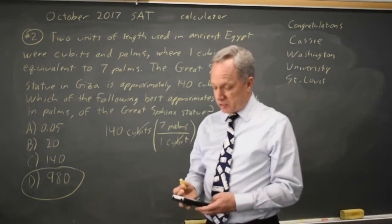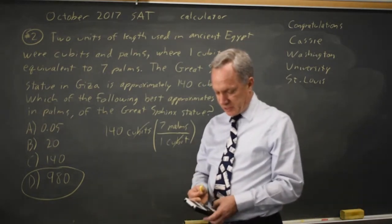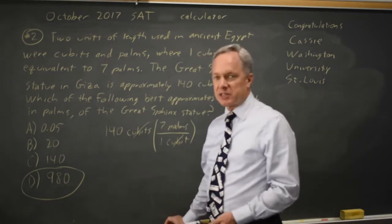If we want an exact value to reassure us, the calculator says 140 times seven is 980, which matches choice D.